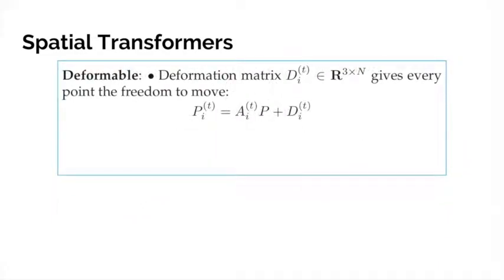The deformation transformer is the combination of an affine transformation on the point cloud, and a deformable matrix d sub i that gives every point the freedom to move. We learn the deformable transformer from both the point cloud location and its features.